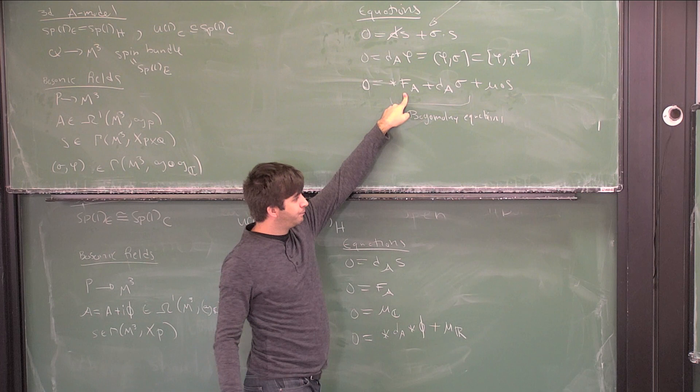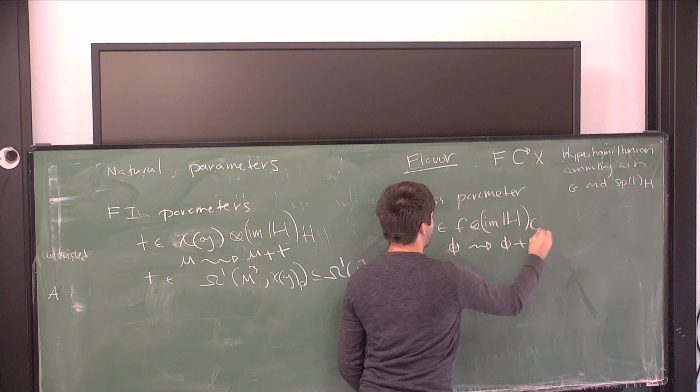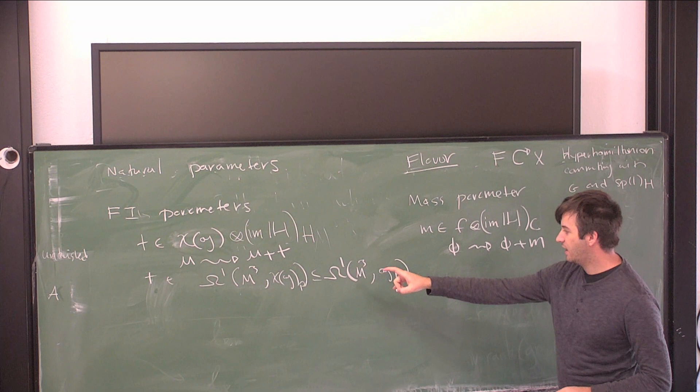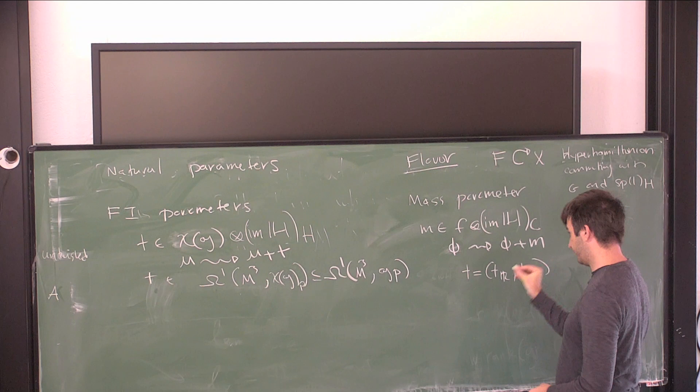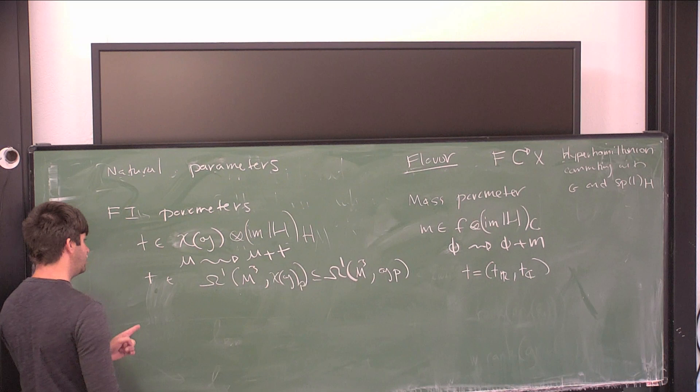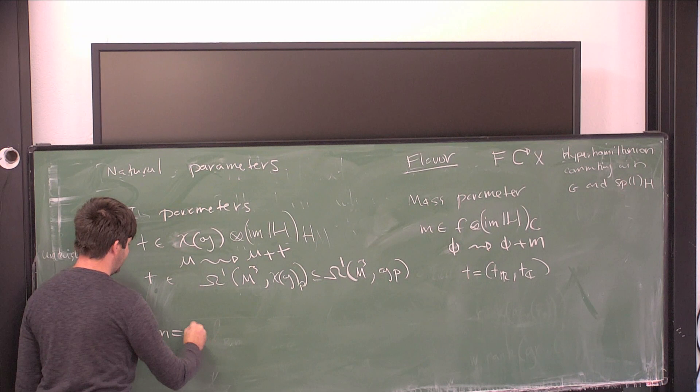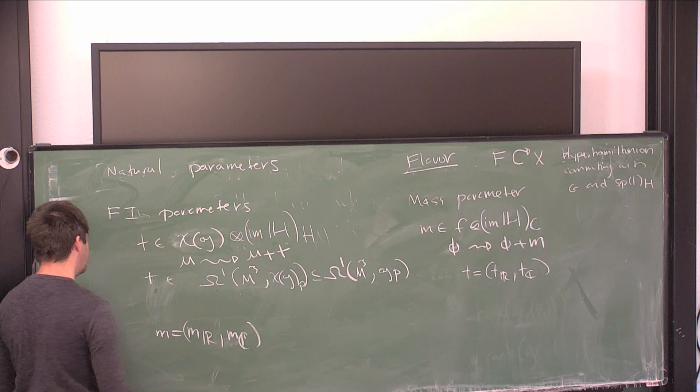What the mass parameter does to the equations is: you replace your moment map μ by μ + t. And the FI parameter modifies your φ. In the A-twist this FI parameter looks like a one-form; in the B-twist it breaks into real and imaginary parts but stays scalar. In the B-twist the mass parameter breaks into real and complex parts, and becomes a connection on a trivial F bundle.